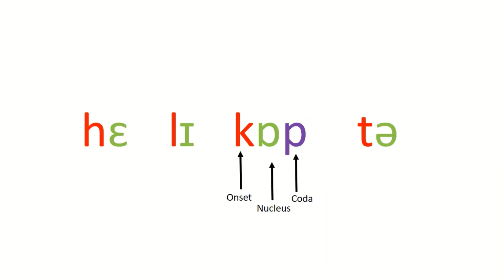You're probably wondering what happened to the codas on the rest of the syllables. Well, the answer is that they just don't have one. You see, English, like many other languages, makes the nucleus compulsory, but the onset and coda optional.